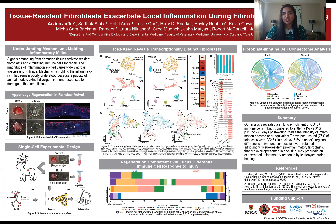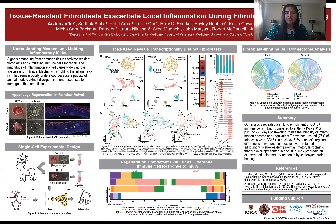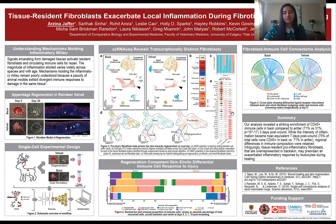We then performed a correlation analysis which looks at the gene profiles between back and velvet and essentially tells you how similar that cell type is between the two. What we found was that the fibroblasts were one of the most different cell types between the back and the velvet skin. We then further analyzed the fibroblasts and identified three distinct populations: pro-fibrotic, pro-regenerative, and mixed.